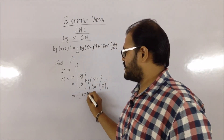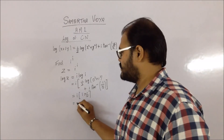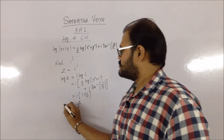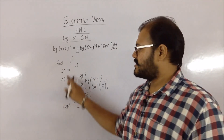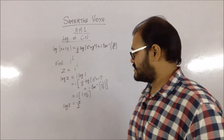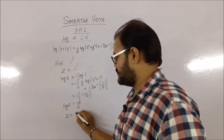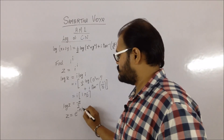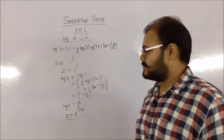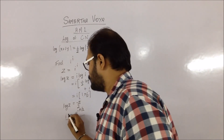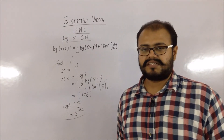So log(i) = i·(π/2), and therefore log(z) = i·(i·π/2) = i²·(π/2). Since i² = −1, log(z) = −π/2. To find z, we take the antilog (exponential), giving z = e^(−π/2). Therefore, i^i = e^(−π/2).